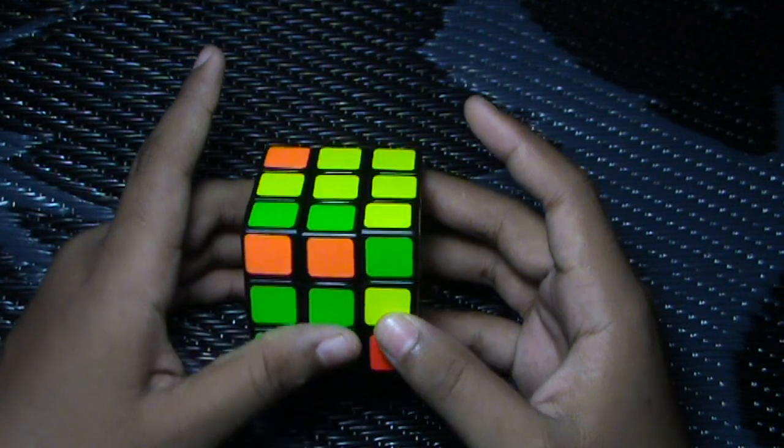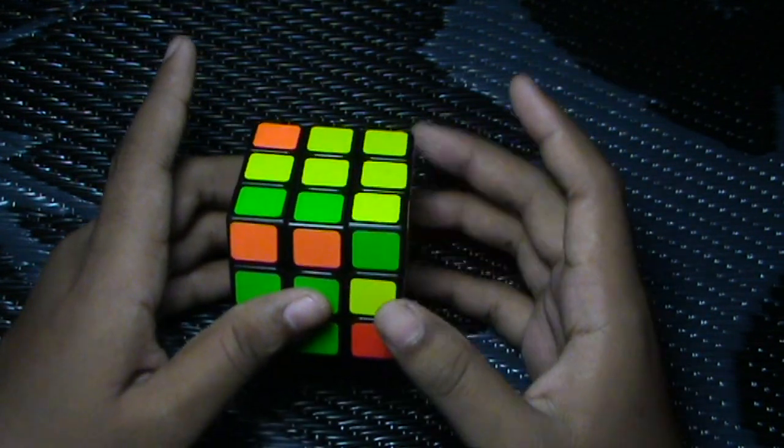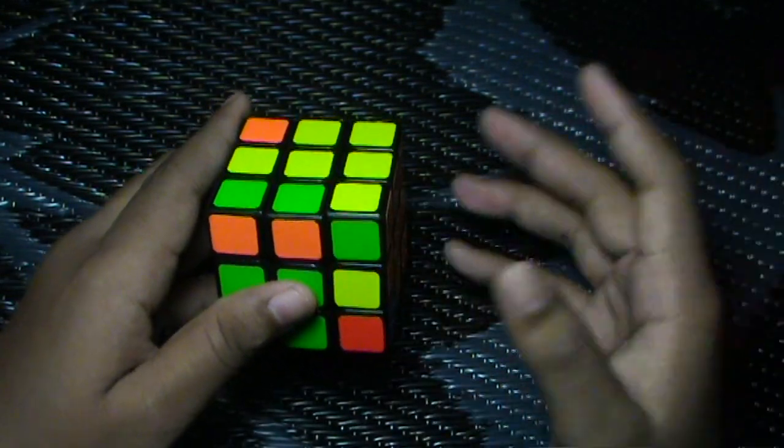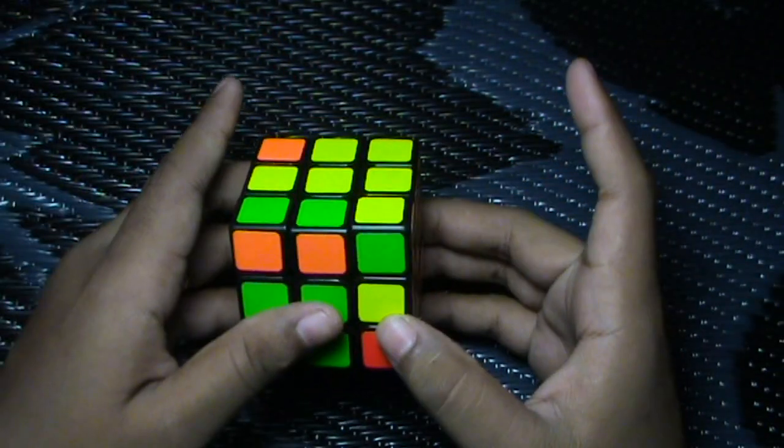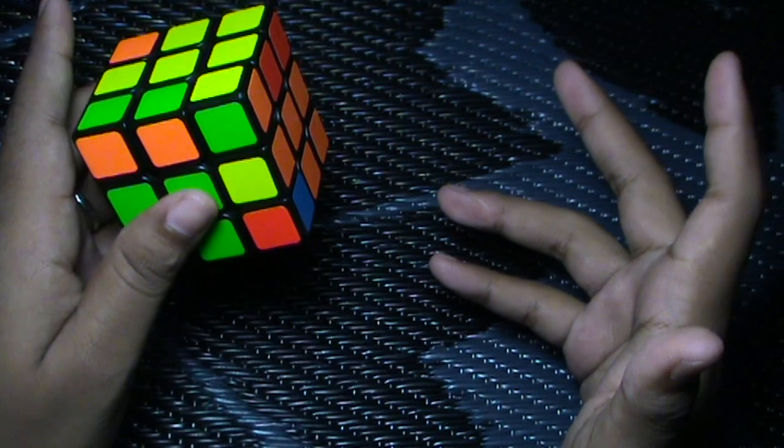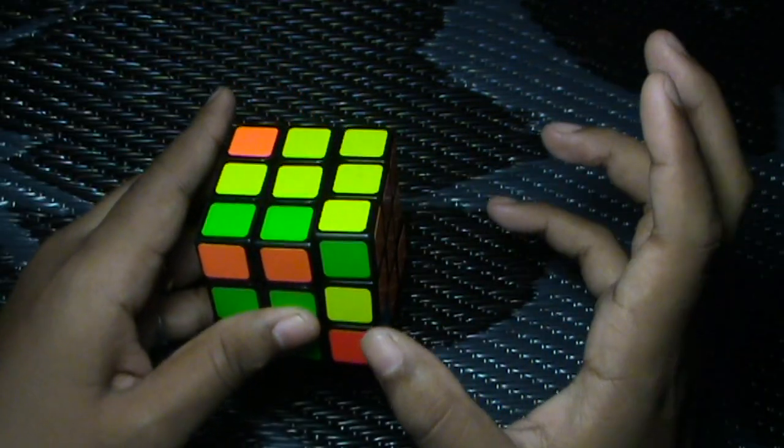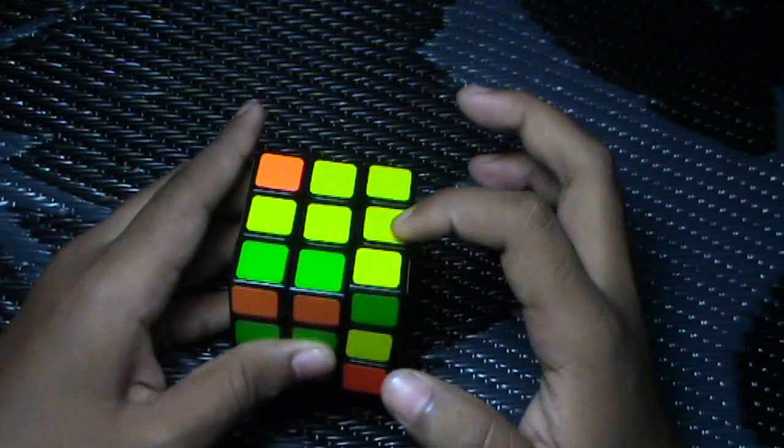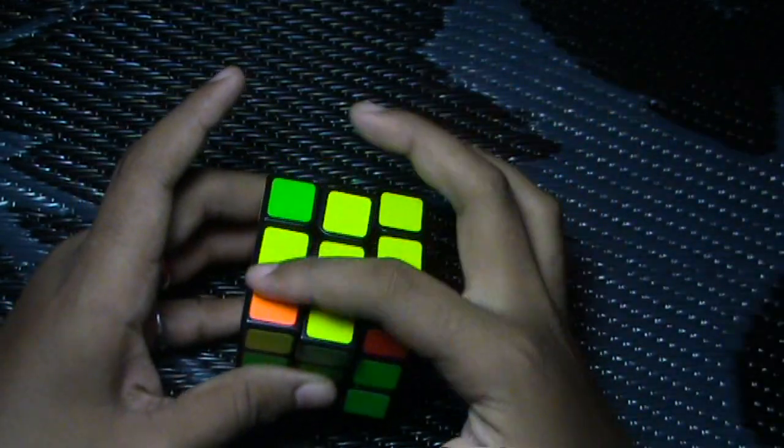Hey guys, it's me Critical Cubing. In this video I'm gonna show you full edge control intuitively. I learned this on my own myself intuitively and I will show you how I go about doing it. Full edge control is when you are inserting the last F2L pair and have all of the edges oriented like that.